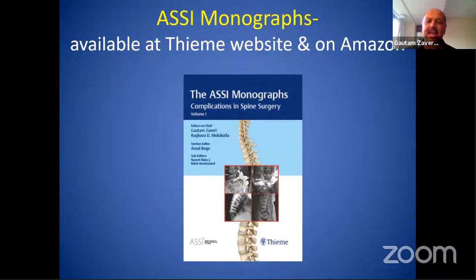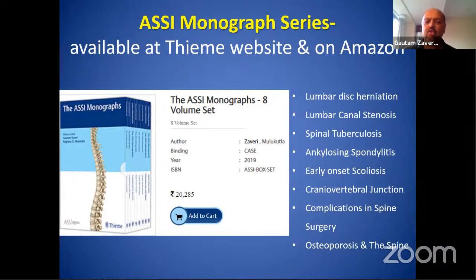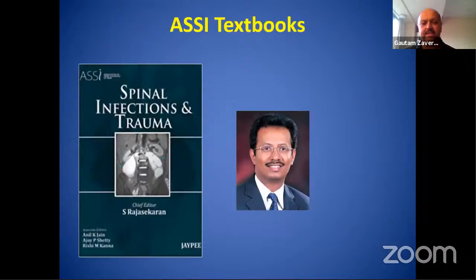Last year, ASSI launched a series of eight monographs on key topics in spinal surgery, covering subjects such as lumbar disc herniation, stenosis, spinal tuberculosis, and ankylosing spondylitis, among others. These are available through medical publishers TM or the Amazon website at fantastic discounted rates.